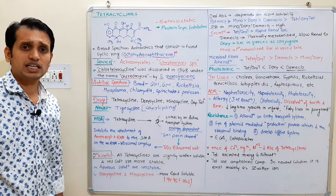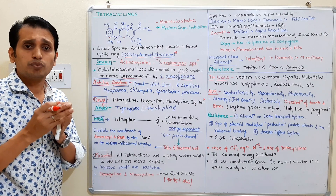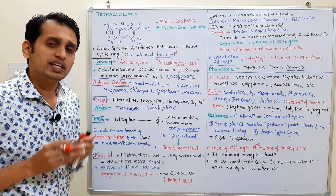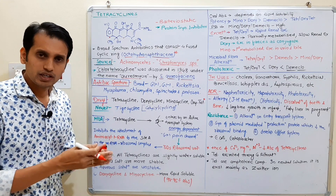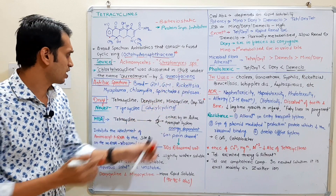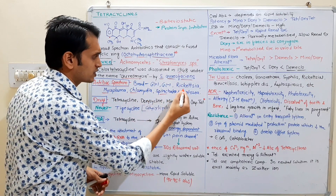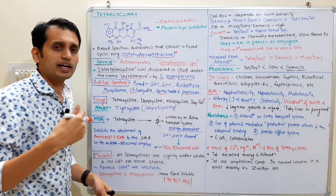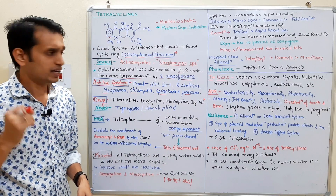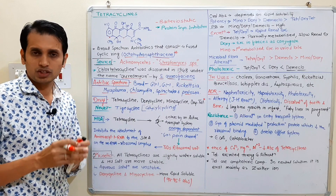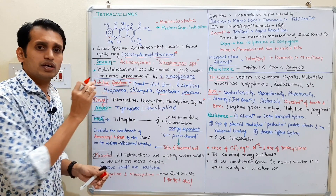Tetracyclines are broad spectrum antibiotics, meaning they inhibit the growth of various pathogens like gram-negative bacteria, gram-positive bacteria, as well as Rickettsia, Mycoplasma, Chlamydia, spirochetes, and protozoa. Two main broad-spectrum drugs are chloramphenicol and tetracycline.